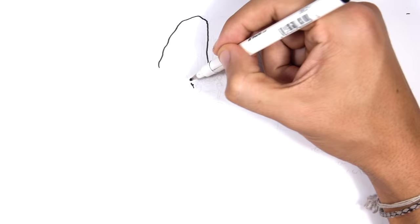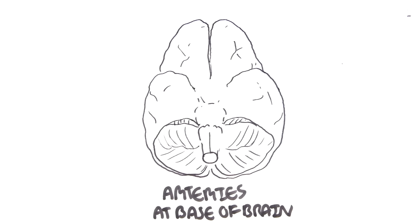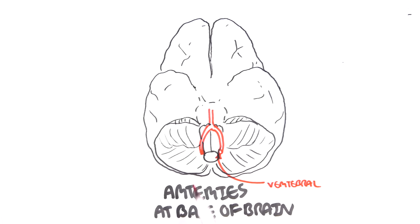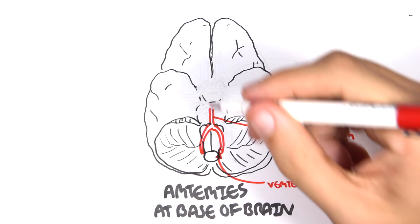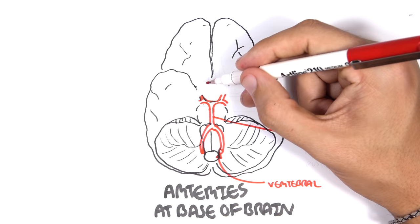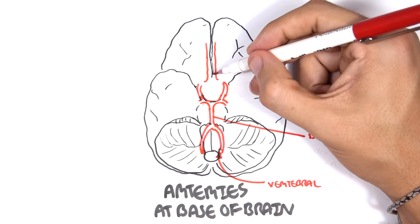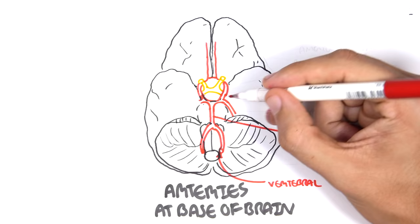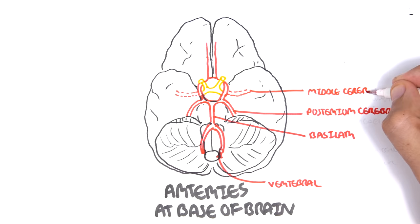Now let us look at the arterial supply of the brain from the same inferior view. Crawling up the brainstem you have the two vertebral arteries, which come from the subclavian artery. These vertebral arteries join to form the basilar artery. The basilar artery continues up the brainstem — up the pons and midbrain — before bifurcating to form a circle around this region, known as the circle of Willis. The circle of Willis gives off a few branches: the posterior cerebral, the middle cerebral, and the anterior cerebral arteries.